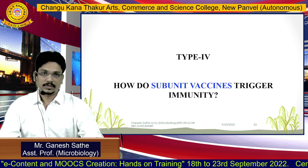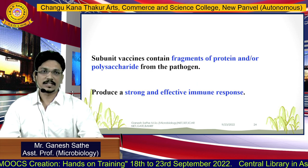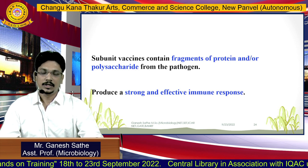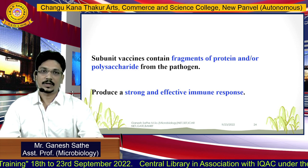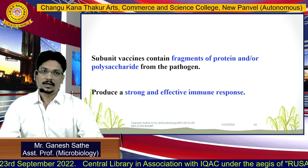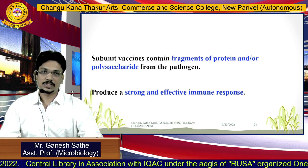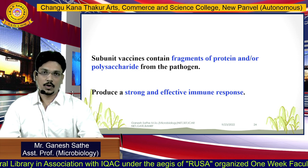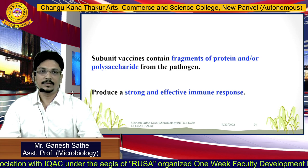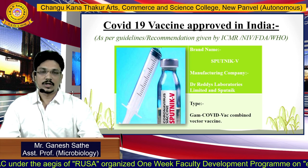How do subunit vaccines trigger immunity? A subunit vaccine is simply a fragment of protein or a fragment of polysaccharide. After administration, our immune system considers it as an antigen and tries to synthesize an immune response against it. The important advantage of this subunit vaccine is that it produces a strong and effective immune response, and it is also available in India.